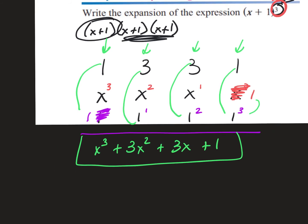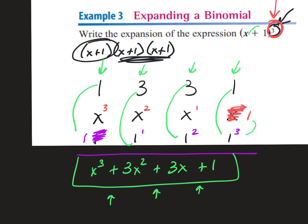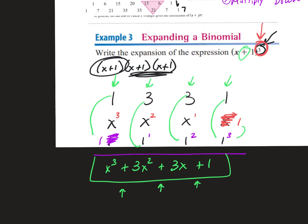Notice all my terms are positive. If the sign in the middle is a plus, everything is positive. If it's a minus, the signs alternate: plus, minus, plus, minus. All you have to do with Pascal's triangle is figure out the row — then everything else is just basic multiplication and addition.